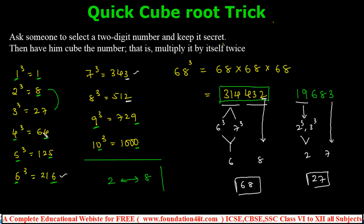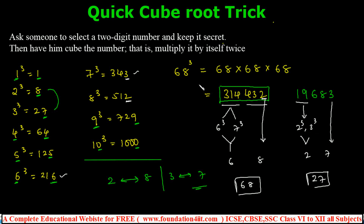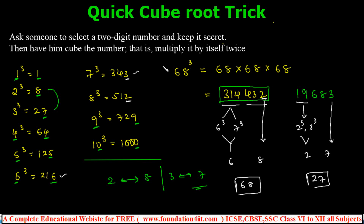So just remember the single-digit cubes and these unit-digit relations: 2↔8 and 3↔7, rest are same. You can find the cube root of any two-digit number's cube just by observing the number. This is a simple but impressive trick — when someone uses a calculator and reads out the cube, you can guess the original number directly.